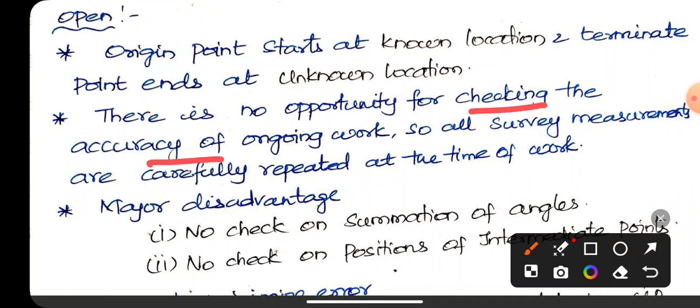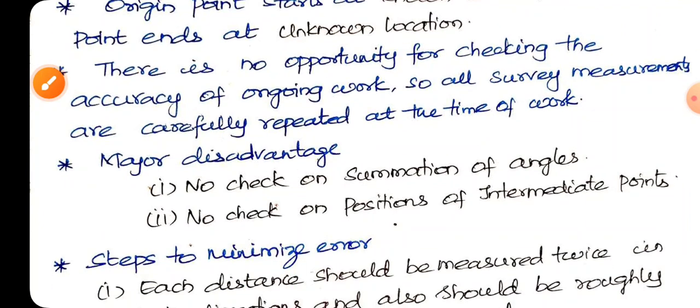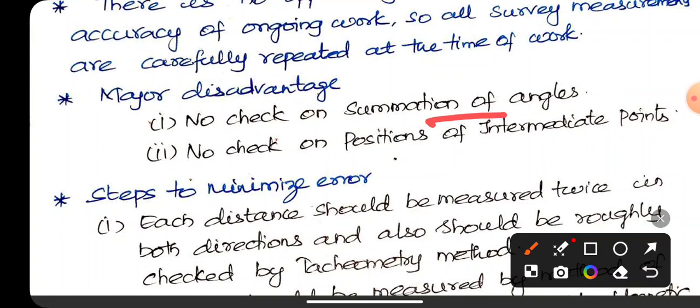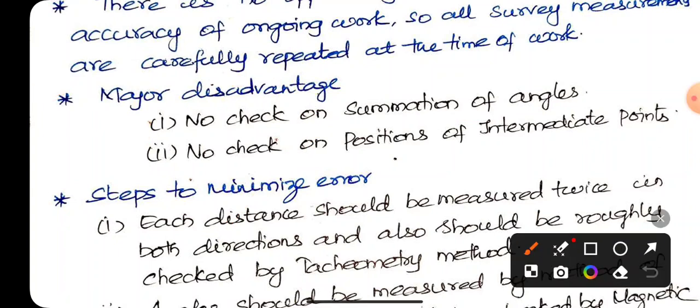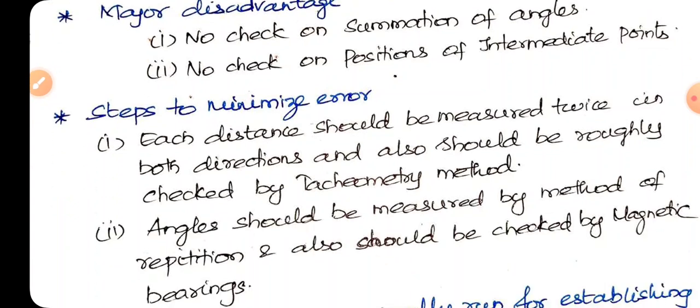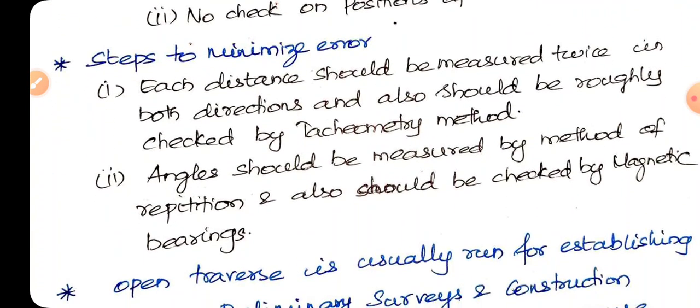There is no opportunity for checking the accuracy of ongoing work, so all survey measurements are carefully repeated at the time of work. This is open. Major disadvantage is no check on summation of angles. Closed is 2n-4, the formula will be accurate. No check on position of intermediate points.